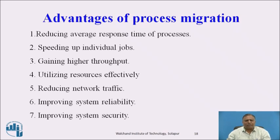Reducing Average Response Time: If load on a node increases, the average response time of the process increases. Hence, migrate some processes to a node that is idle or lightly loaded. Speeding Up Individual Jobs: Migrate tasks of a job to different nodes and execute them concurrently. Migrate a job to the node having a faster CPU or minimum turnaround time. The gain in execution time must be more than the migration cost.